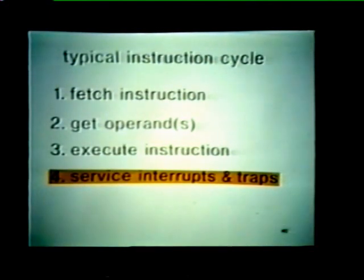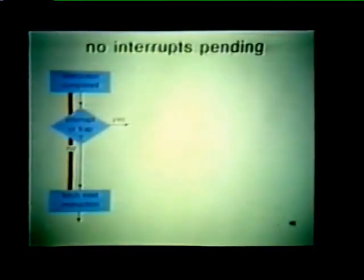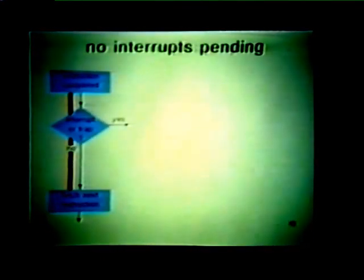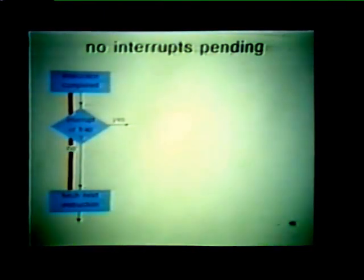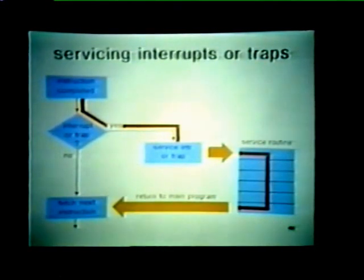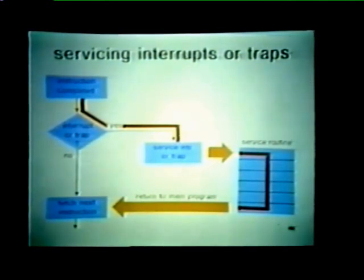Now that the instruction has been executed, the processor must service any pending interrupts or traps. If no interrupts or traps are pending, the CPU can immediately fetch the next instruction and go through another instruction cycle. However, if an interrupt or trap is present, the CPU must service it by stepping through a service routine. When the service routine is completed, the processor returns to the main program and fetches the next instruction.